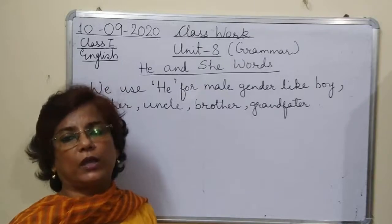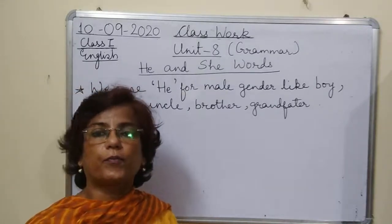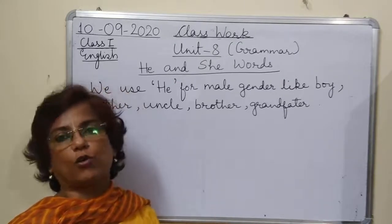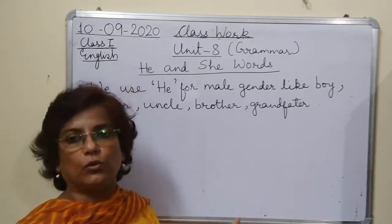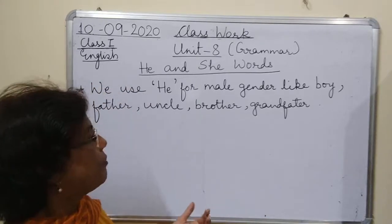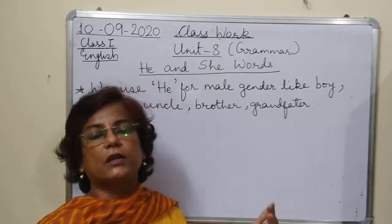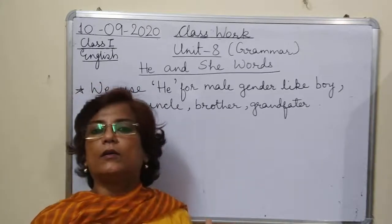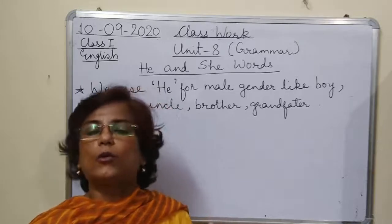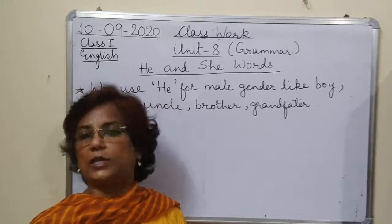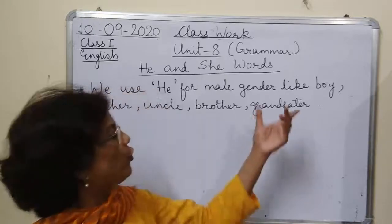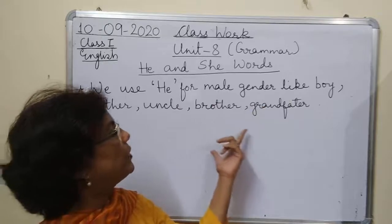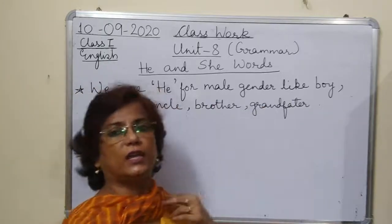For example: Rohan is a boy — he is very tall. My father is very tall — he is very smart too. My grandfather is old — he is 86 years. My brother is very good looking — he is very handsome, he is very smart. So for all these male genders — like boy, father, uncle, brother, grandfather — we use 'he.'